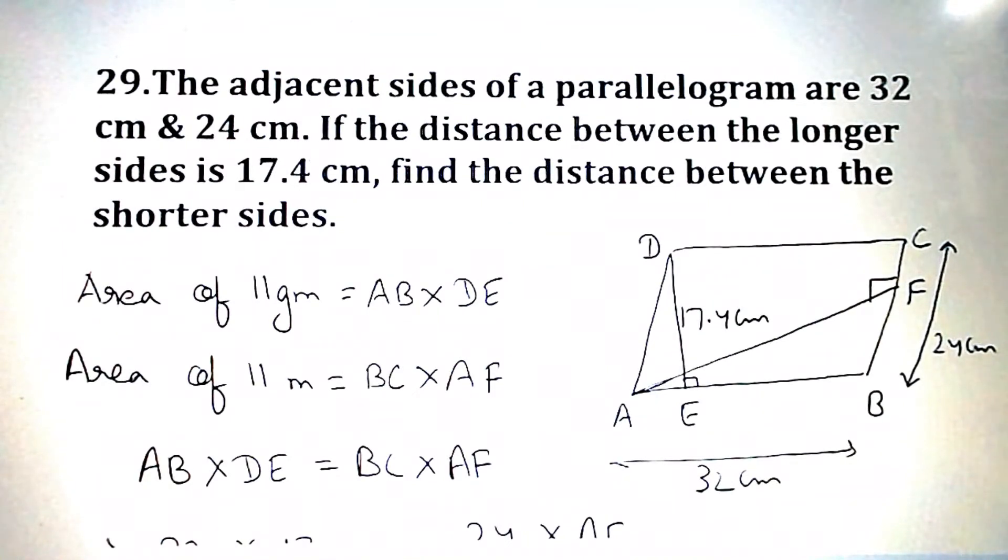Question number 29. The adjacent sides of a parallelogram are 32 centimeter and 24 centimeter. If the distance between the longer sides is 17.4 centimeter, find the distance between the shorter sides. It is given that adjacent sides, that is AB and BC, are 32 centimeter and 24 centimeter.